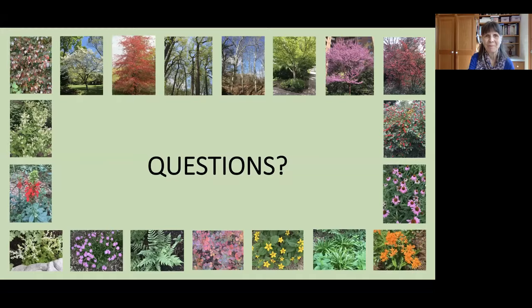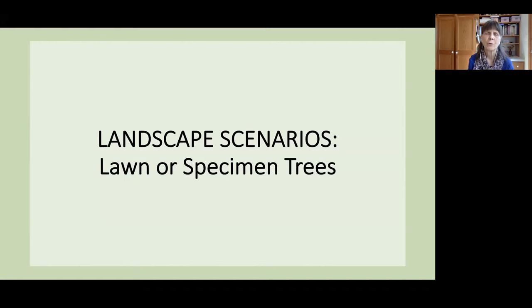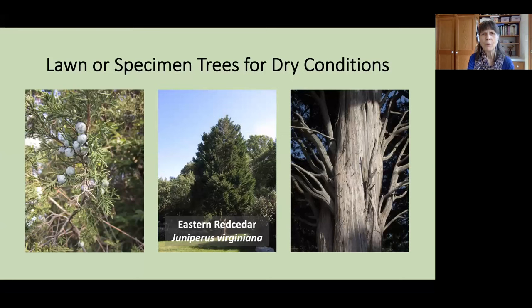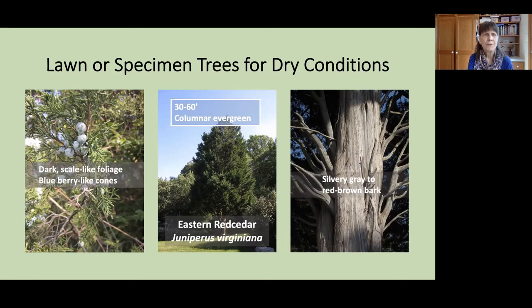Now, let's say you don't feel that you have enough room in your yard to create an entire layered forest, but you might want to consider some native lawn or specimen trees. Beginning with some trees for dry conditions, the first is Eastern Red Cedar, Juniperus virginiana. It reaches about 30 to 60 feet mature height. It has a columnar shape and is evergreen, notable because of its silvery gray to red-brown bark. It has very dense, dark scale-like foliage — a perfect hiding place and cover for wildlife. On the female trees, you will see these blue berry-like cones.